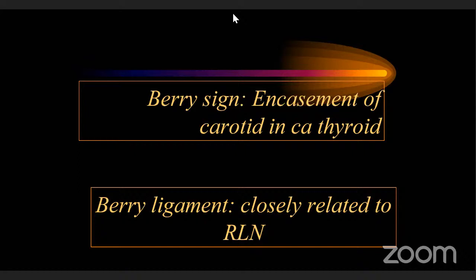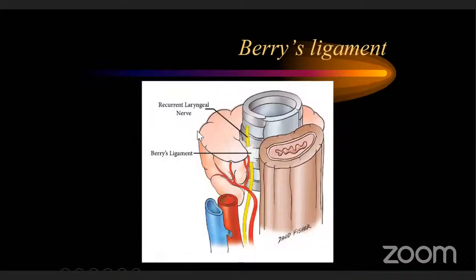The Berry sign: in malignancy, the thyroid cancer may encase rather than just push the carotid artery. Therefore, you cannot feel the carotid pulsation on the side of the malignant nodule. This is called the Berry sign and is a sign of infiltration. Normally, the carotid is palpable behind a thyroid nodule — even in multinodular goiter. Only in malignancy is the pulsation absent on the side of the nodule.